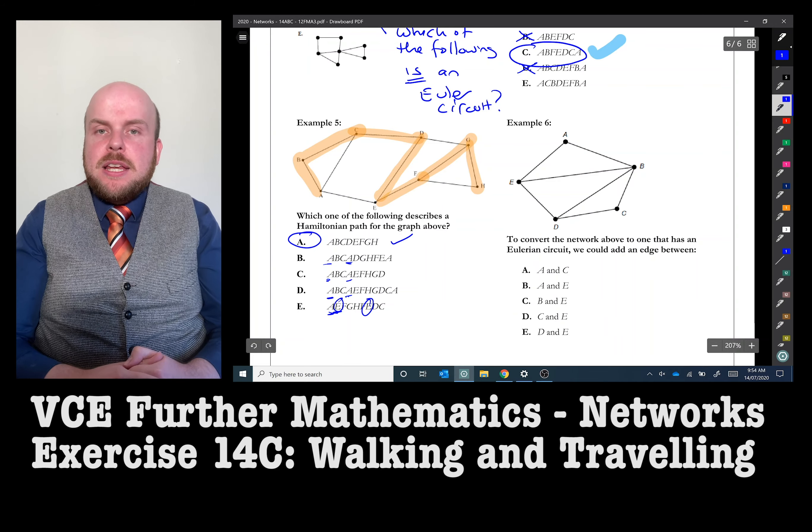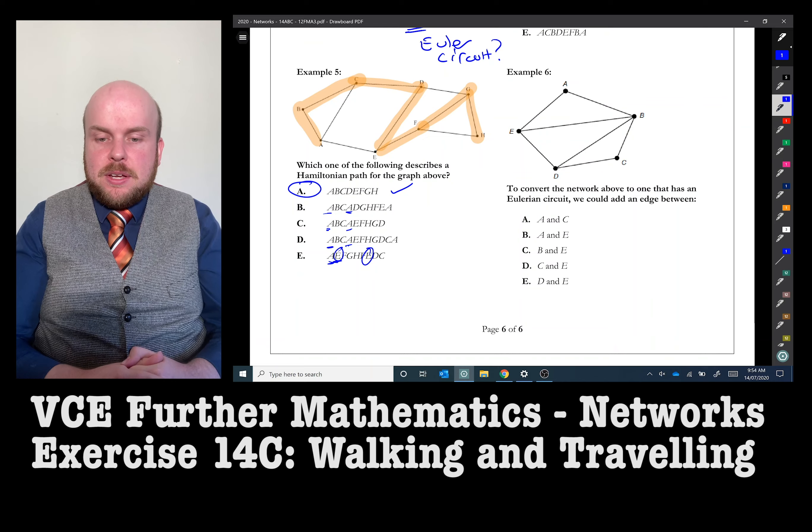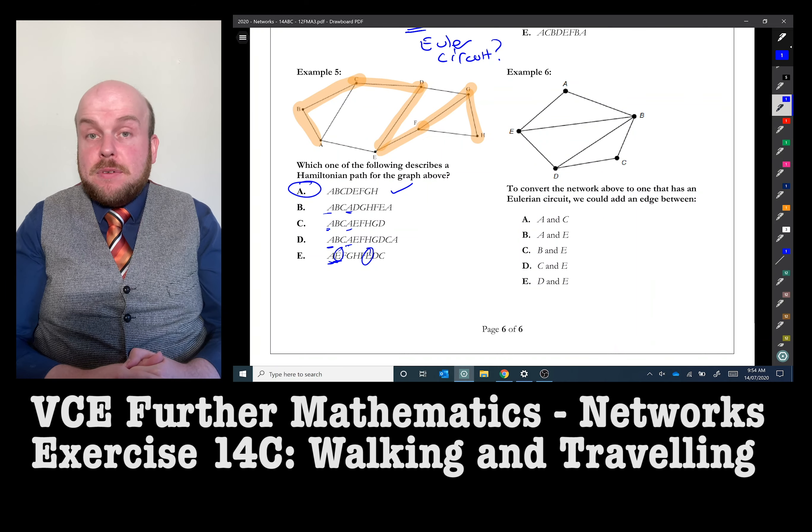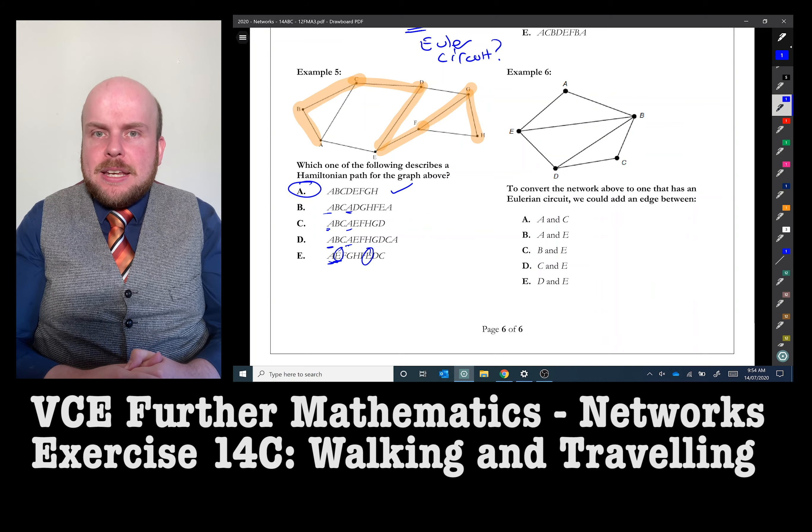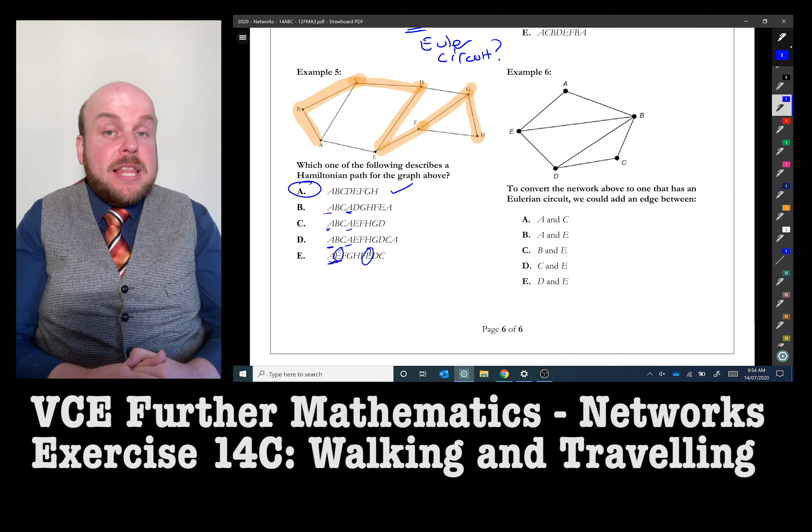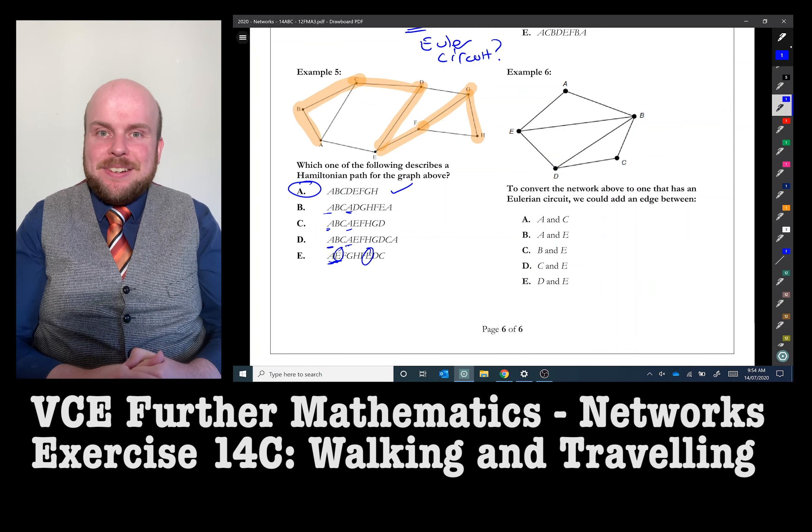In example six, I need to convert the network above to one that is an Eulerian circuit. So I therefore need to add an edge somewhere. So where could I add a single edge to make it an Eulerian circuit?